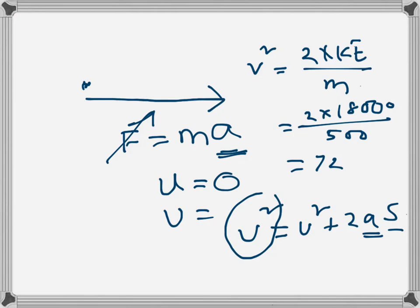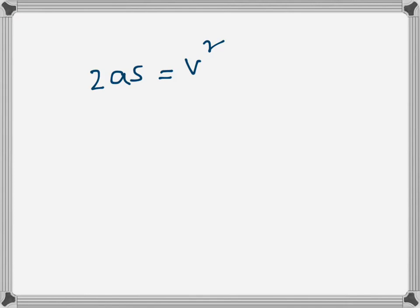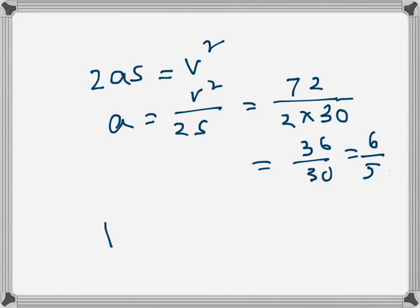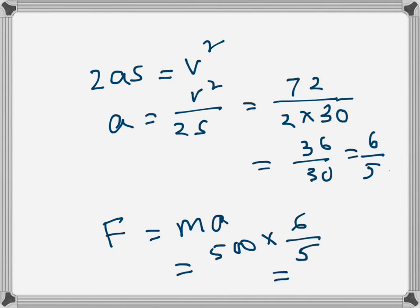Now substituting into v² = u² + 2as with u = 0: 2as = v², so a = v² / (2s) = 72 / (2 × 30) = 72 / 60 = 6/5. Now we can find F: F = ma = 500 × (6/5) = 600 newtons. That is the force.